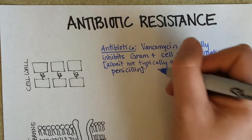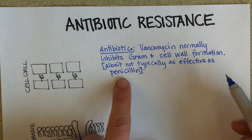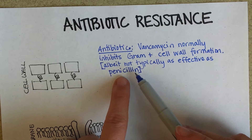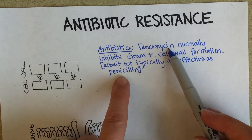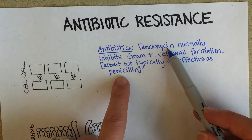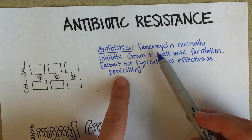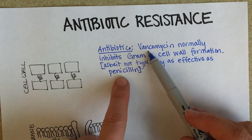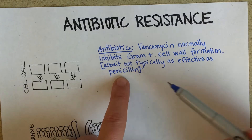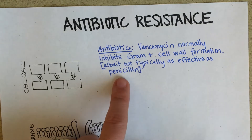To help you understand what that means: if you had a bacterial infection and the bacteria had not developed resistance to penicillin, then penicillin would be a more effective drug to give than vancomycin. But if the bacteria has developed resistance to penicillin, then vancomycin becomes one of your only options — it will inhibit gram-positive cell wall formation, but not as well as penicillin would have without that resistance.